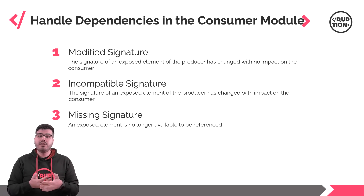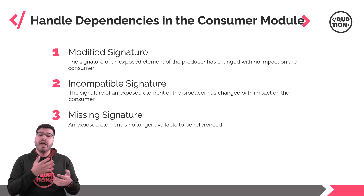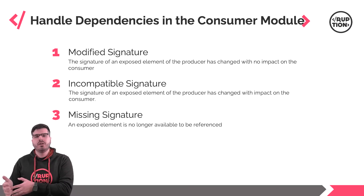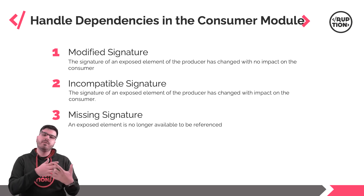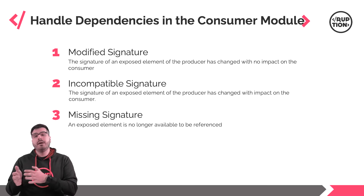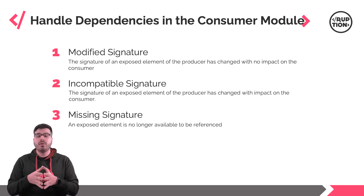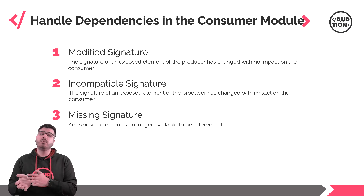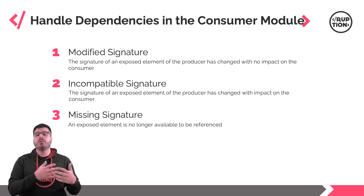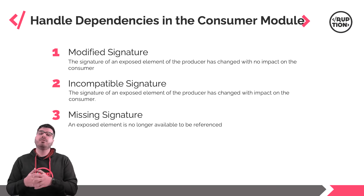We also have the incompatible signature, which means the signature of an exposed element of the producer has changed with impact on the consumer. This is dependent on the type of dependency discussed earlier. If it's a strong dependency, this change will not originate runtime errors unless we republish the consumer without refreshing its dependencies. If it's a weak dependency, the change will cause runtime errors in the consumer module. The best way to deal with this is to refresh the consumer module and adapt the logic to the changes made.